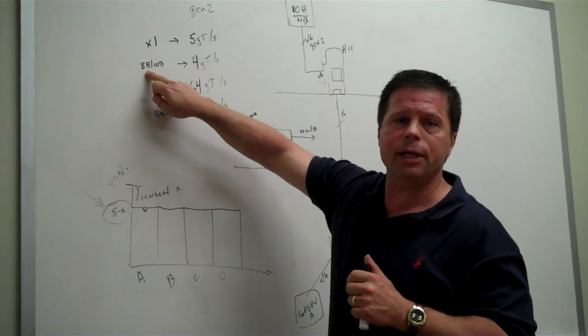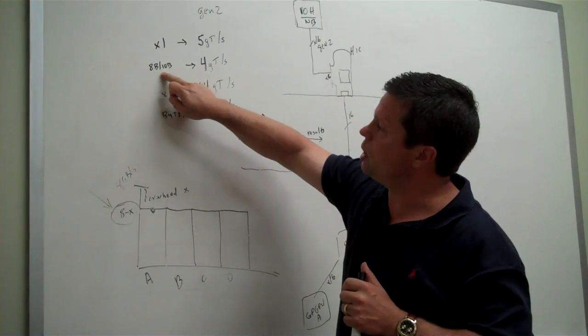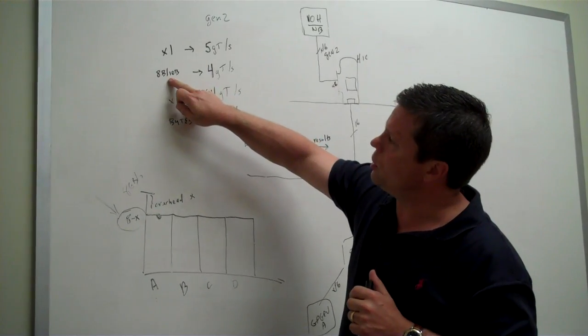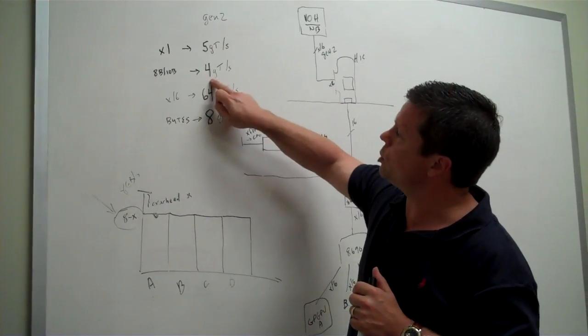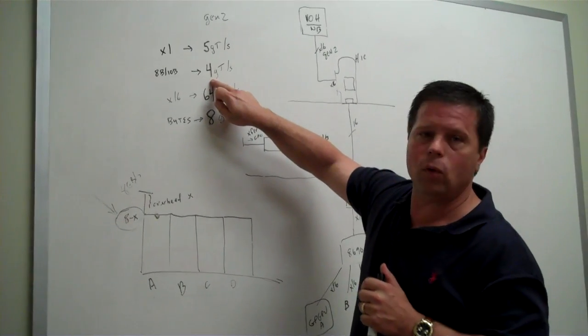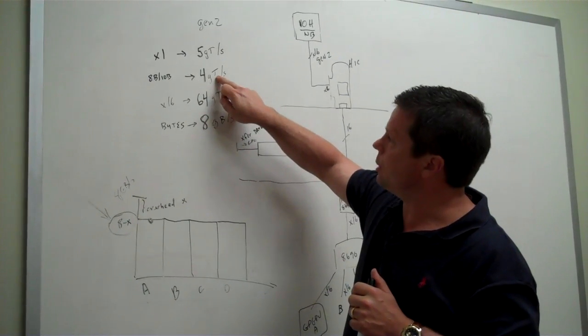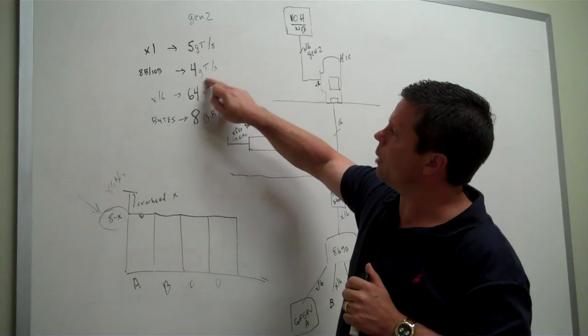they use a scheme called 8B-10B to achieve the clock encoding, which means that you have some inefficiency. You have to back out 20%, which leaves you to actual 4 gigabits. And probably should have a B here, a small b, 4 gigabits per second.